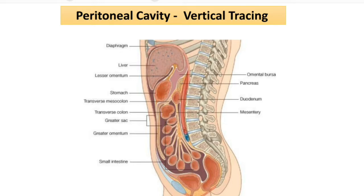We will start the tracing of the peritoneal cavity from the anterior abdominal wall. The parietal peritoneum lines the anterior abdominal wall, then it goes to the inferior side of the diaphragm, then it is reflecting on the liver. The first layer is related to the posterior abdominal wall and is also reflecting and enclosing the liver. This is the second layer.